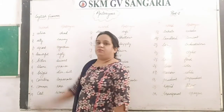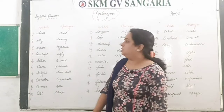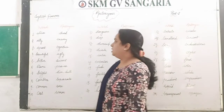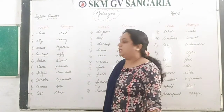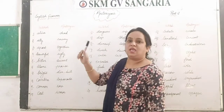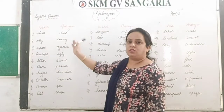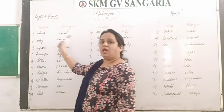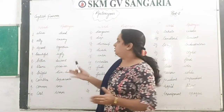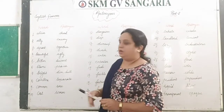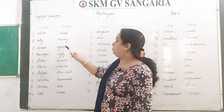The first word is 'alive,' A-L-I-V-E, and the opposite word — the antonym — is 'dead,' D-E-A-D. Next, second is 'ally,' A-L-L-Y. Ally means friend, and the antonym is 'enemy,' E-N-E-M-Y, which is the opposite of friend. So ally means friend and enemy is its opposite. Third is 'apart,' A-P-A-R-T, which means when things are separate or distributed. The antonym for apart is 'together.'